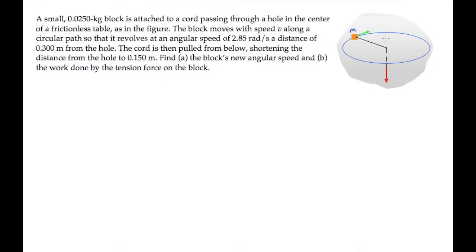The block in this problem is attached to a string that goes through a hole in the center of the table so that it moves in a circular path at an angular speed of 2.85 radians per second. We're told that someone pulls down on the string, reducing the circle's radius to half of its initial value, and we're asked to find the new angular speed.